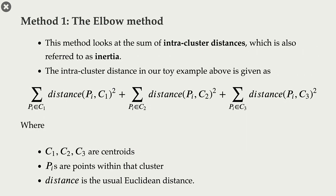The first one is the elbow method. This method looks at the sum of intracluster distances. For each point in our dataset, we compute the squared distance of that point with its cluster center, sum these squared distances together for each cluster, and sum everything together. That's our intracluster distance, also referred to as inertia.